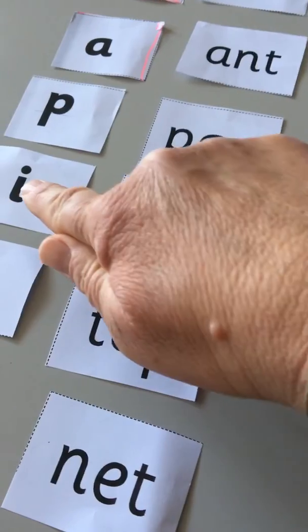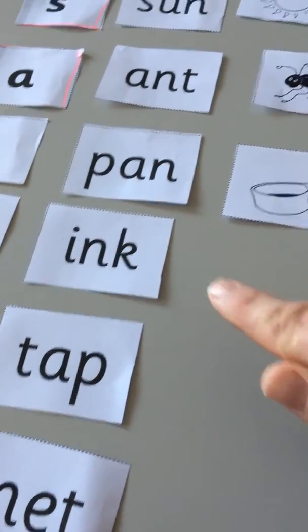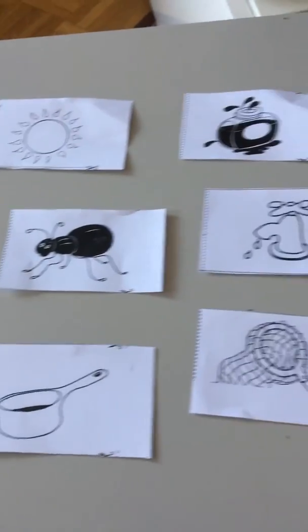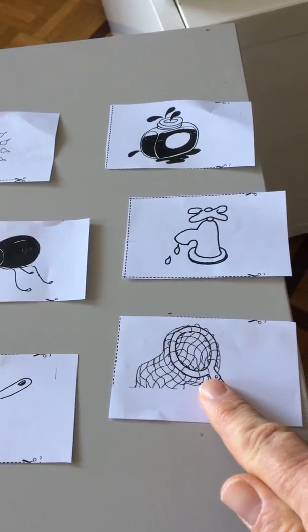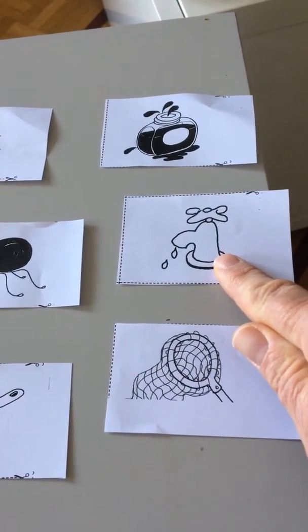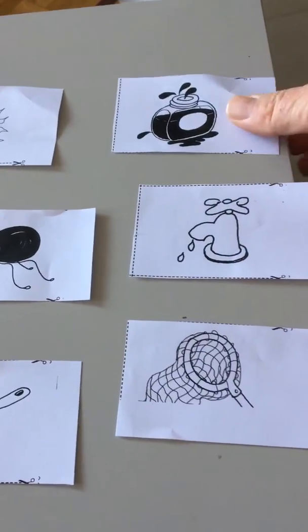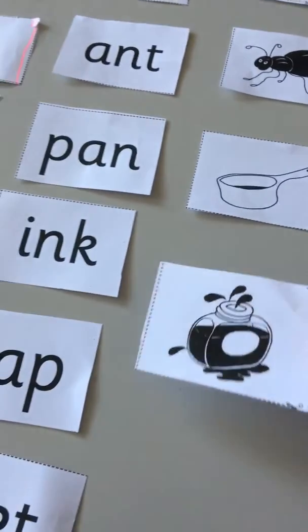Ink. I. Ink. Where's the ink? Ink. It's gonna be over here. Is this it? No, that's the net. This is the tap. Here's the ink. Put it down here.